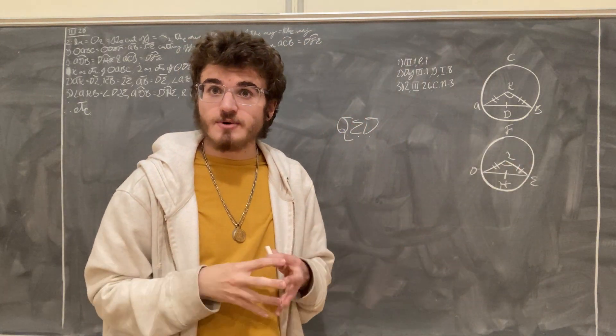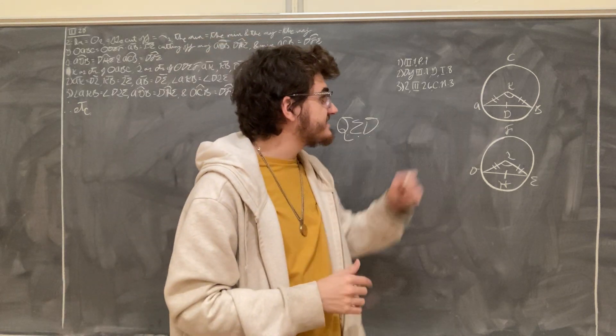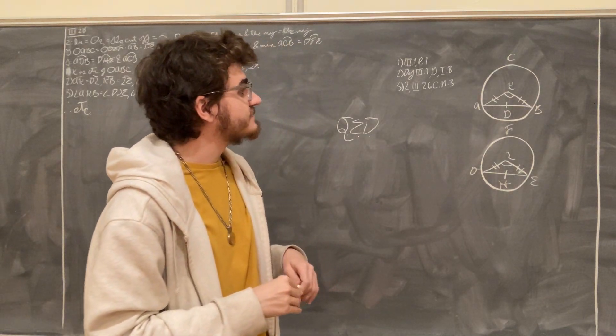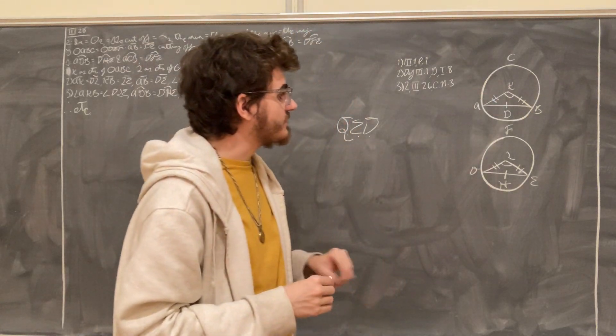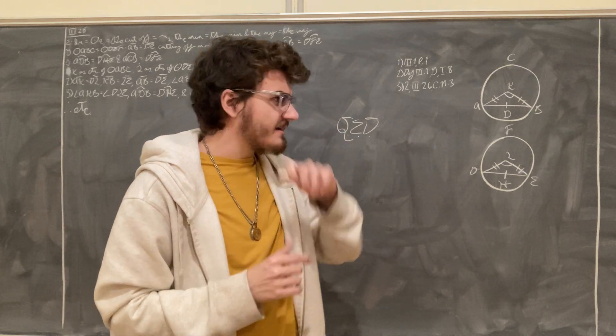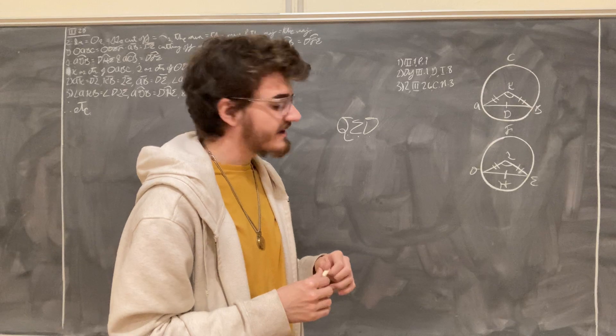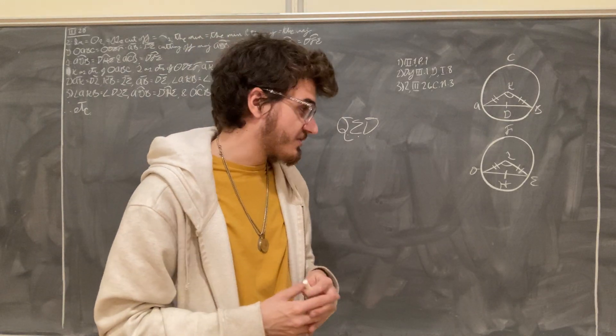Now, we had shown in proposition 3-26 that equal angles stand on equal arcs, and so the angle AKB being equal to the angle DLE stand on equal arcs, namely that the arc AGB is equal to the arc DHF. This is the first thing we set out to prove.